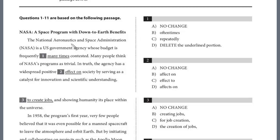The National Aeronautics and Space Administration, NASA, as a U.S. government agency's budget, is frequently many times contested. So question one, you can really predict this without looking at the choices. We have frequently, right? This is correct because it's not underlined, and then we have many times. Why would we say frequently many times? That's redundant or repetitive. We definitely don't need the many times, and so the answer is we're going to delete it.